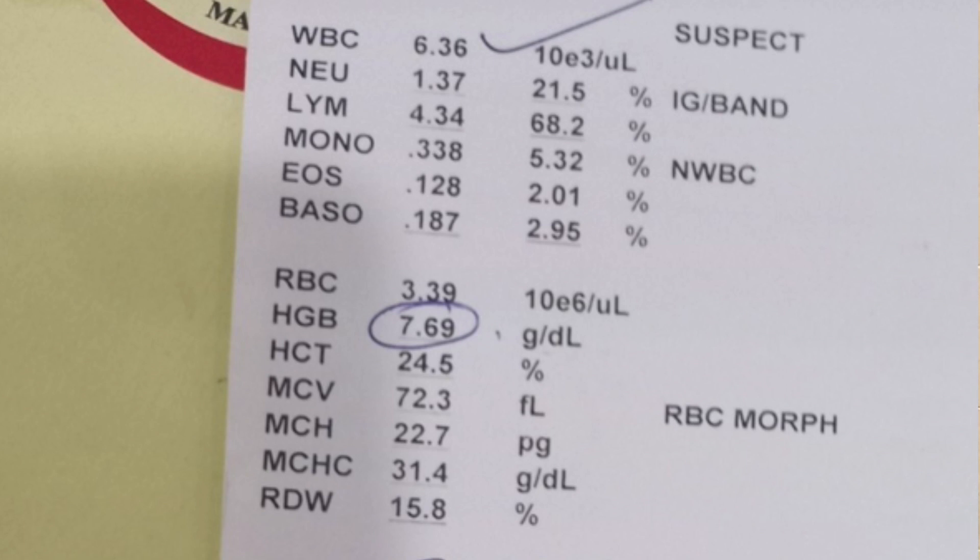MCV was low and MCH was low. In beta thalassemia minor, there is hypochromic microcytic anemia, which is why the MCV — the size of the red blood cell — is low, and the mean corpuscular hemoglobin — the hemoglobin inside one red blood cell — is also low. So hypochromic microcytic anemia was present.